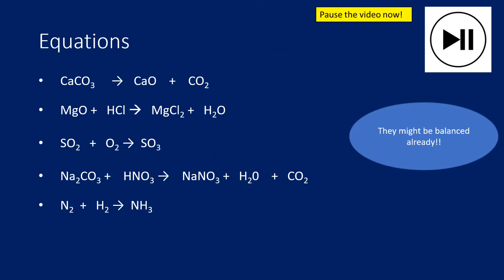Here are five more equations — I suggest you pause the video and have a go yourself at balancing these, then unpause and I'll go through them. Following the same logic: for the first one, there is one calcium on each side, one carbon on each side, and three oxygens on the left and three on the right — so that one is actually already balanced.